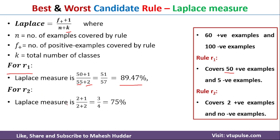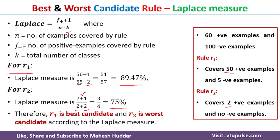For rule number two, the Laplace measure is (2 + 1) / (2 + 2) = 3/4, which equals 75%. Comparing the two, the Laplace measure of r1 is greater than r2, indicating that r1 is the best candidate. I hope the concept is clear. If you like the video, do like and share with your friends, press the subscribe button for more videos, and press the bell icon for regular updates. Thank you for watching.